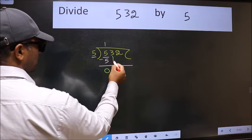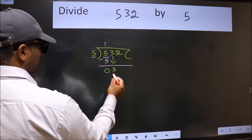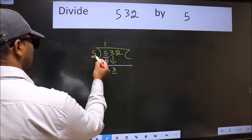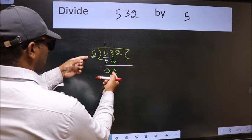After this, bring down the beside number. So, 3 down. Now here we have 3 and here 5. 3 is smaller than 5.